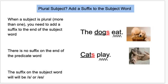When a subject is plural, which means there's more than one, you need to add the suffix to the subject word and not the action predicate word, like you did when the subject was singular. There is going to be no suffix on the end of the predicate word when there is a plural subject, and the suffix that goes on the end of the subject word will be the letter S or the letters ES.